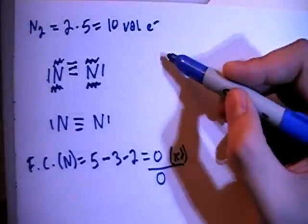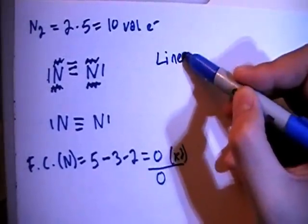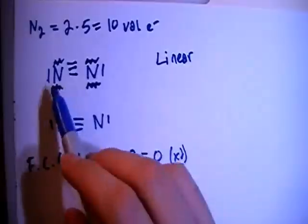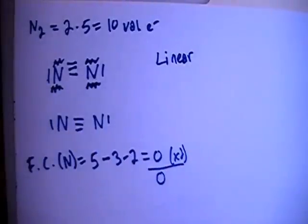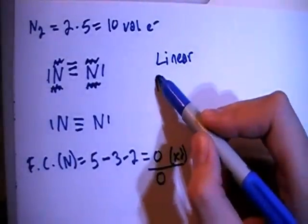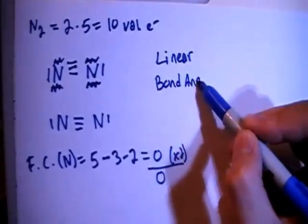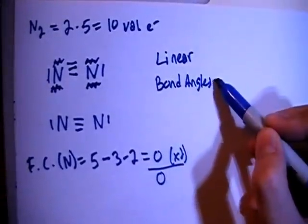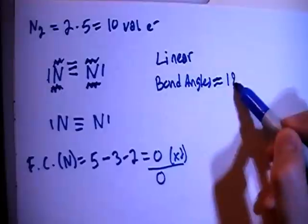All right, we can talk about the shape real quick. This is going to be a linear shape, only two atoms. And with linear shapes, the bond angles are going to be approximately 180 degrees.